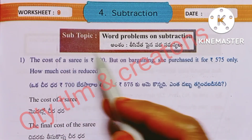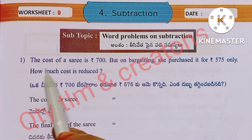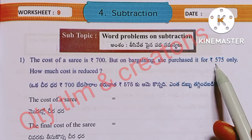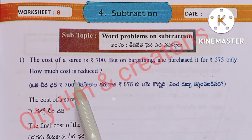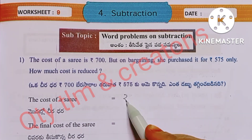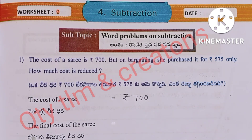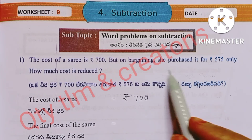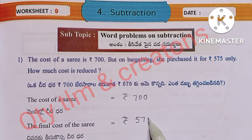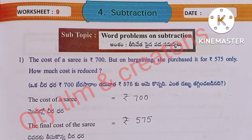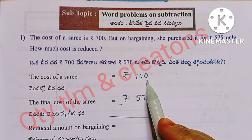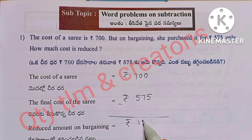Next, worksheet number 9, subtopic: word problems on subtraction. First question: The cost of a saree is 700 rupees, but on bargaining she purchased it for 575 rupees only. How much cost is reduced? Cost of the saree: 700 rupees. Final cost: 575 rupees. When we subtract 575 from 700 we get 125 rupees. So the reduced amount on bargaining is 125 rupees.